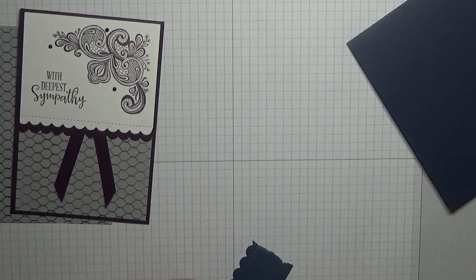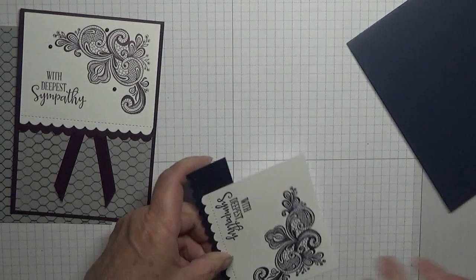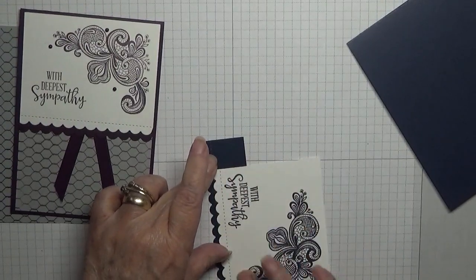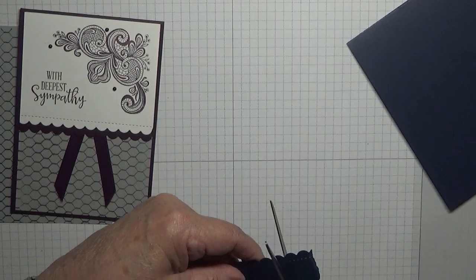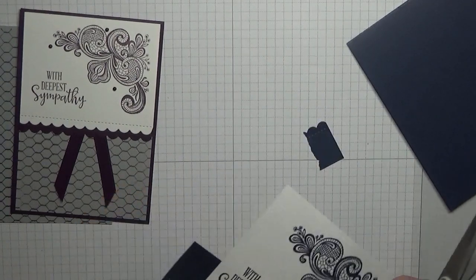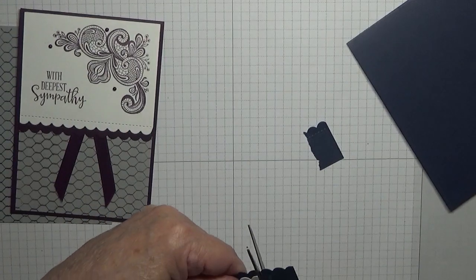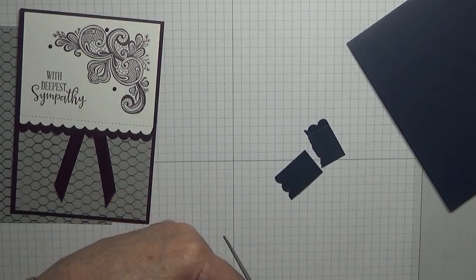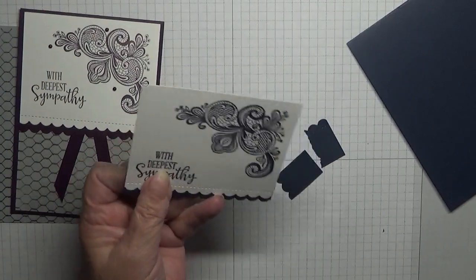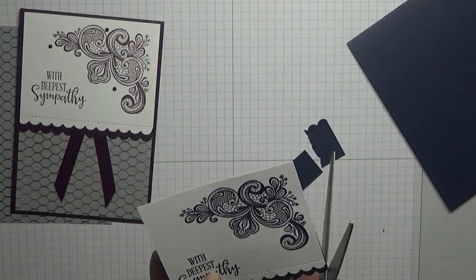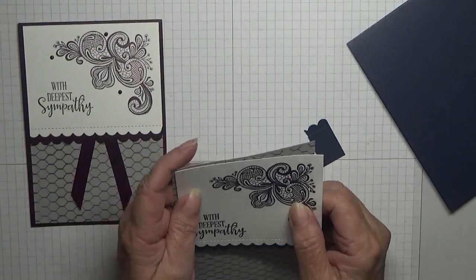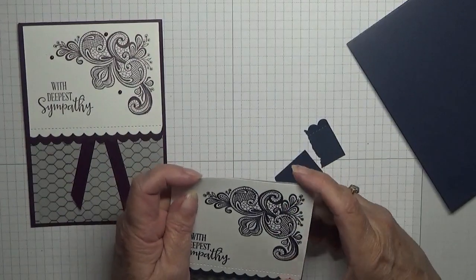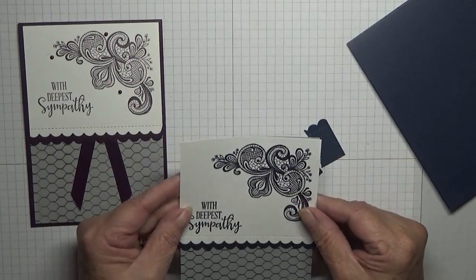Right, add some glue on the back now. Keep that down and then we just trim off what we don't need, like that. And then we'll put that on there, making sure we cover the grey card.